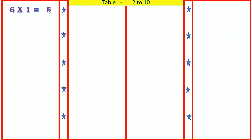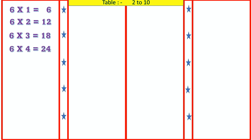6 1's are 6, 6 2's are 12, 6 3's are 18, 6 4's are 24, 6 5's are 30, 6 6's are 36.